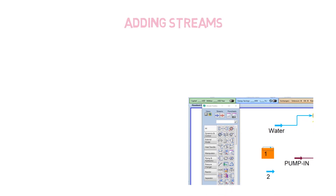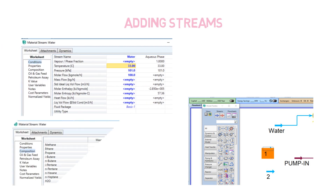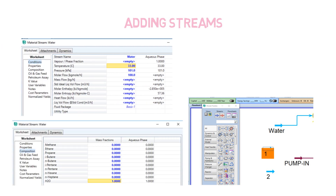Afterwards, we continue with the addition of streams into the flow sheet. We also see how to fully specify a stream, adding conditions such as temperature, pressure, molar flow rate, and mass flow rate. We also see how to set up the composition of the stream.